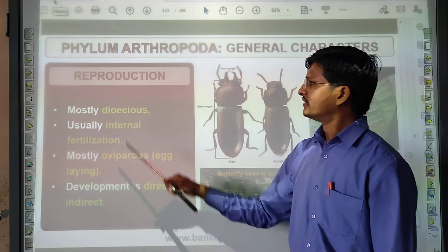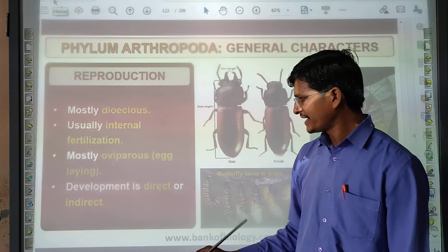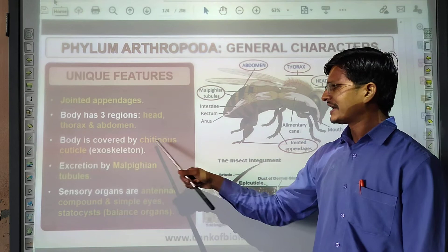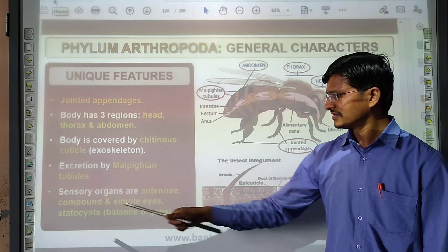Reproduction: mostly dioecious. Usually internal fertilization. Mostly oviparous. Development is direct or indirect. Unique features: they have jointed appendages. Body has three regions — head, thorax, and abdomen. Body is covered with a chitinous cuticle, which forms the exoskeleton. Excretion is by Malpighian tubules. Sensory organs are antennae, compound eyes, and statocysts — balancing organs.